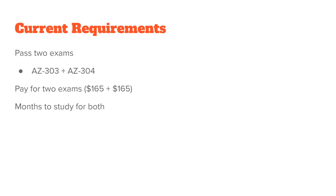In some ways, the new requirements for the Azure Architecture Certification are simpler than the old requirements. The current requirements are to pass two exams — the AZ-303 and the AZ-304. Not only does this mean you have to pay for two exams, which is double the price, but you also have to study for and take two exams, lengthening the time to get the expert certification. In some ways this is justifiable — it's an expert certification, it should be more difficult and take more time.